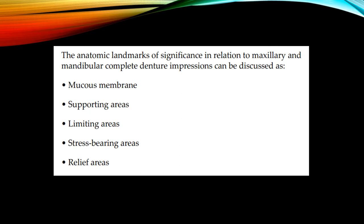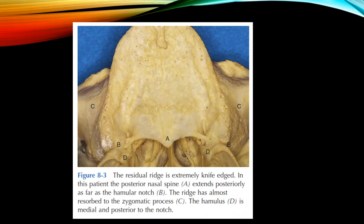In this picture it shows the residual ridge, which is extremely knife-edged. The posterior nasal spine extends posteriorly as far as the hamular notch, which is labeled B. Here is the posterior nasal spine. The ridge has almost resolved to the zygomatic process and the hamulus, labeled D, which is medial and posterior to the notch.